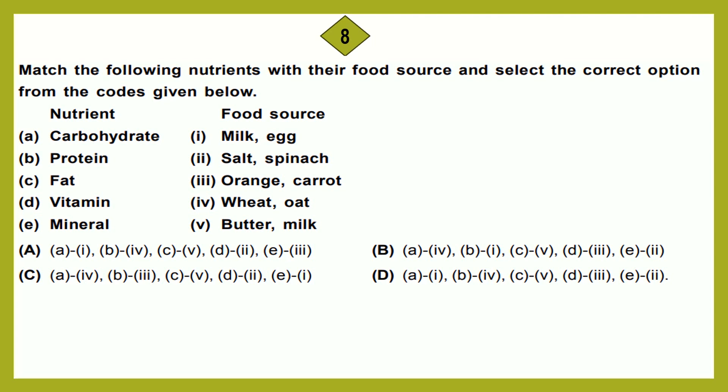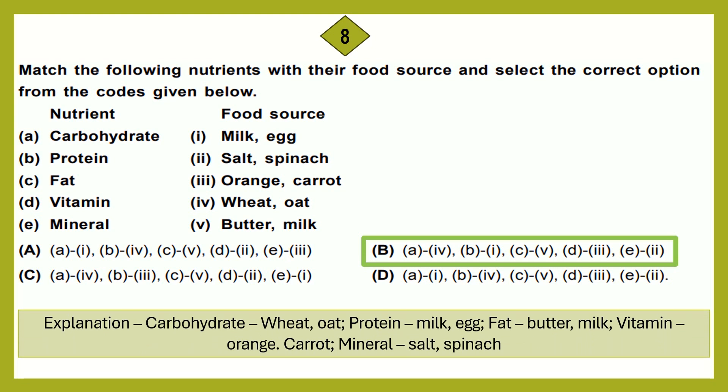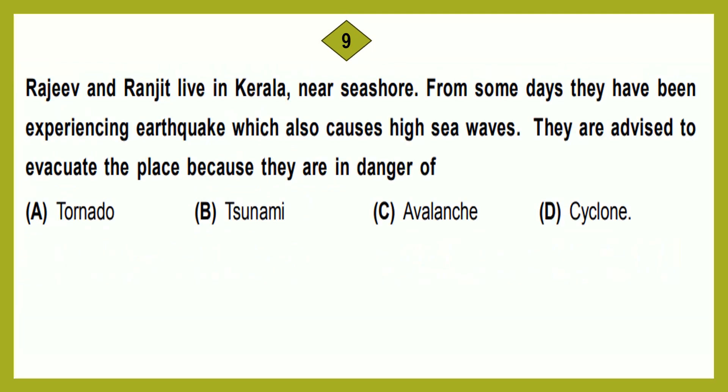Question number 8: Match the following nutrients with their food source. Nutrients given are carbohydrate, protein, fat, vitamin, and mineral. Food sources: milk and egg; salt and spinach; orange and carrot; wheat and oat; butter and milk. The correct answer is option B. Carbohydrate is present in wheat and oat. Protein is present in milk and egg. Fat is present in butter and milk. Vitamins are present in orange and carrot. Mineral is present in salt and spinach.